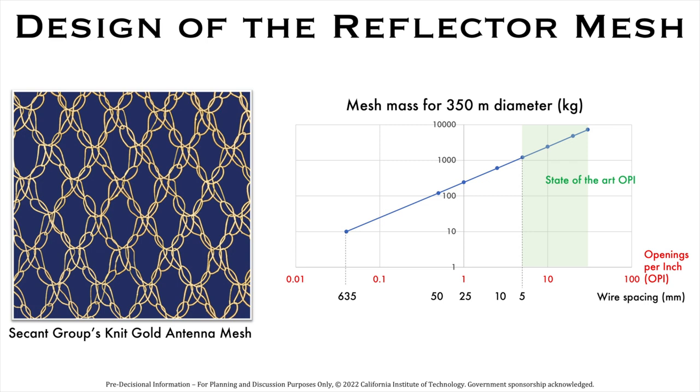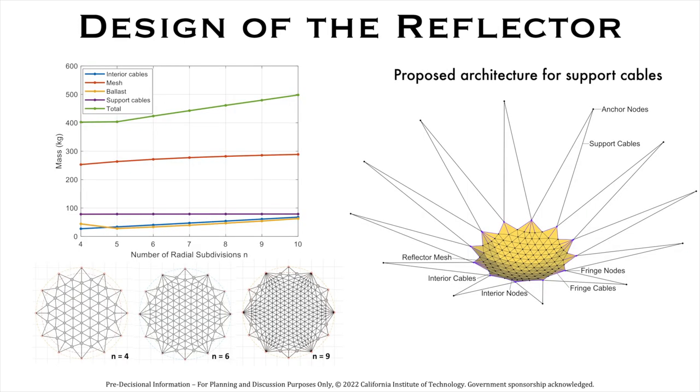State-of-the-art mesh manufacturing can provide us with one openings per inch compliant mesh. This will be overlaid on the network of tensioned cables and provide the perfect surface for RF reflection.